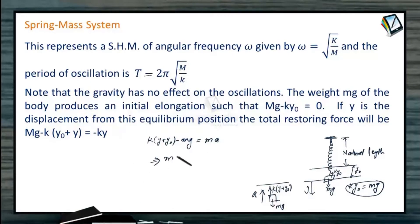As KY₀ equals MG, they cancel, so mass into acceleration remains KY. Therefore A equals minus K by M into Y. The negative sign is due to the restoring nature of this acceleration.